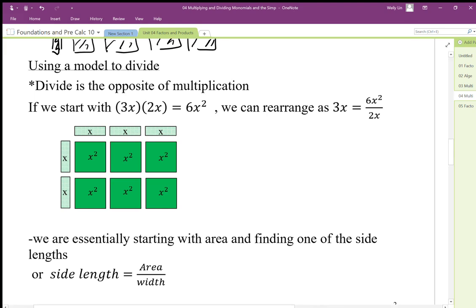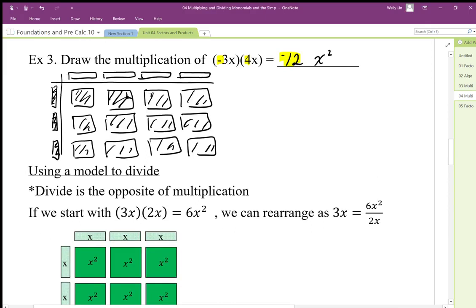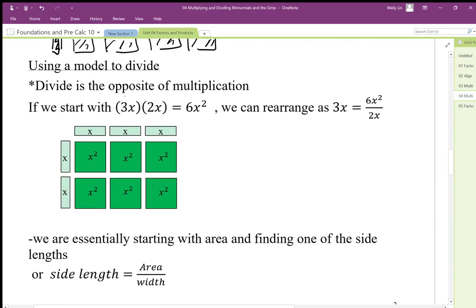When we are setting up the multiplication, we have length times width equals area. So here's my length, here's my width, length times width gives my area. When we rearrange this, we end up with the width equal to the area divided by length.